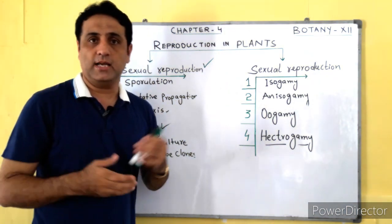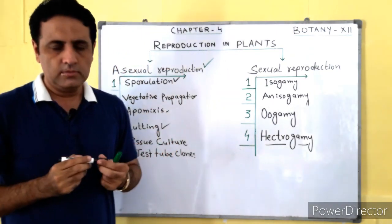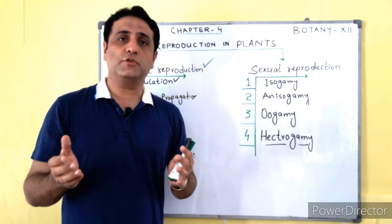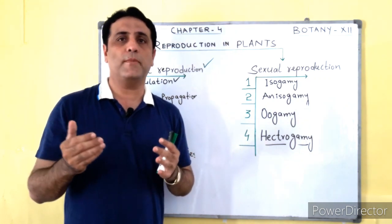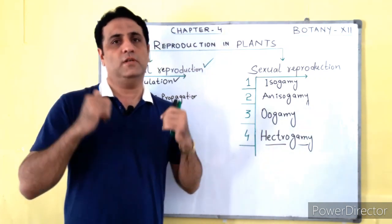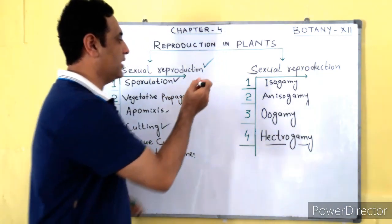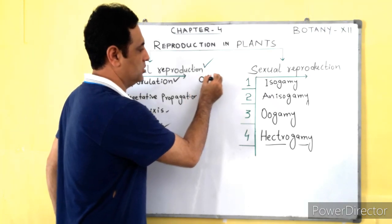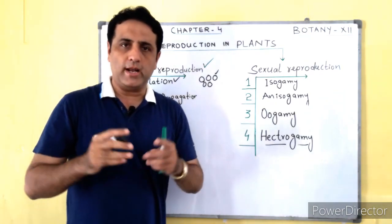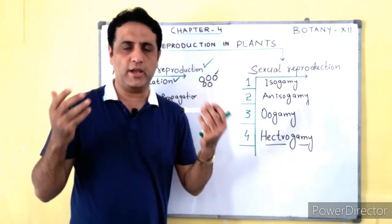The first type of asexual reproduction is sporulation. Spores are reproductive units — reproductive bodies which come from the process of meiosis. Those spores are haploid in nature and they do not need further fertilization in order to grow into other organisms. So without the act of fertilization, those spores can grow into other plants. Each and every spore is capable of growing into another individual without the act of fertilization.